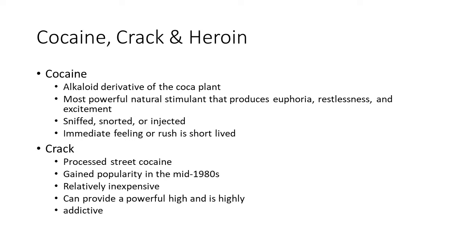Cocaine is an alkaloid derived from the cocoa plant — the most powerful natural stimulant — that produces euphoria, restlessness, and excitement. It's generally sniffed, snorted, or injected, and there's an immediate rush that is short-lived. Crack is another drug teenagers use, also known as rock, gravel, or rock sand. It's processed street cocaine, generally ingested by smoking it. It gained popularity in the mid-1980s. It's relatively inexpensive, can provide a powerful high, and is highly addictive.